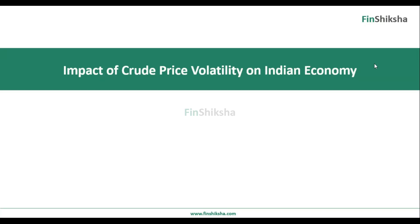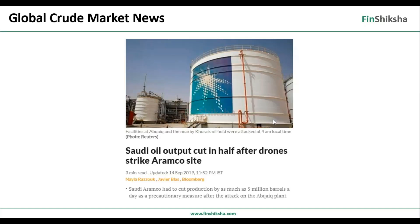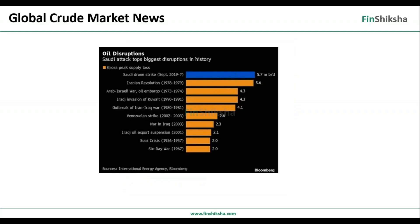In this video we are going to discuss the impact of crude price volatility on the Indian economy, specifically Indian imports. Very recently we saw news about Saudi oil output being cut in half after drones attacked the Saudi Aramco site. This cut in production of about 5.7 million barrels a day — about half of Saudi Arabia's output — was incidentally the biggest ever supply disruption in oil history across many decades. Oil prices were bound to shoot up because of this supply disruption.